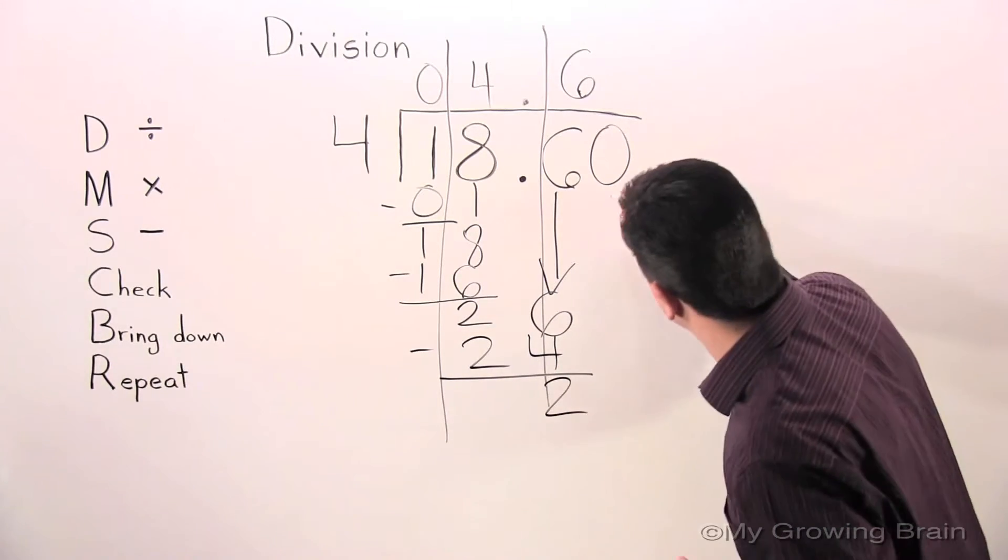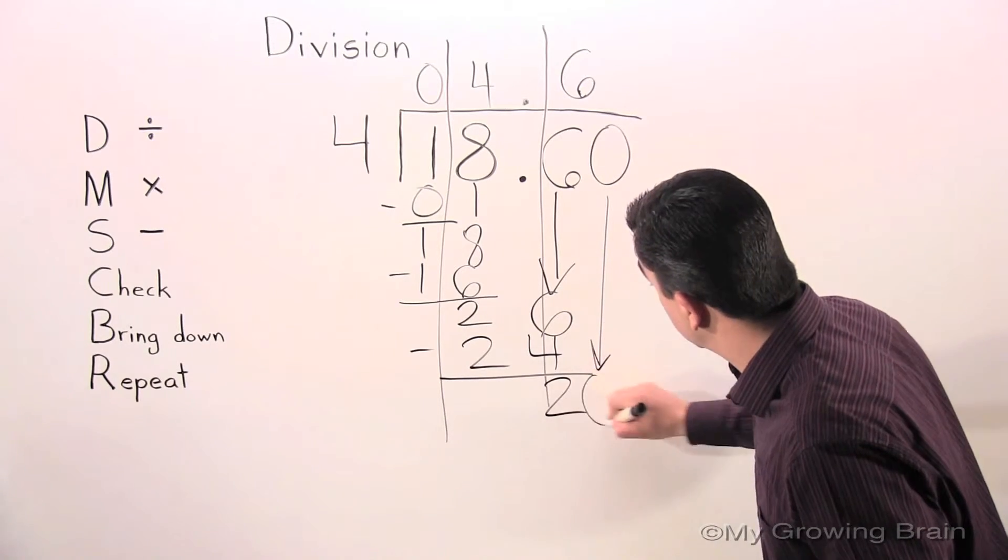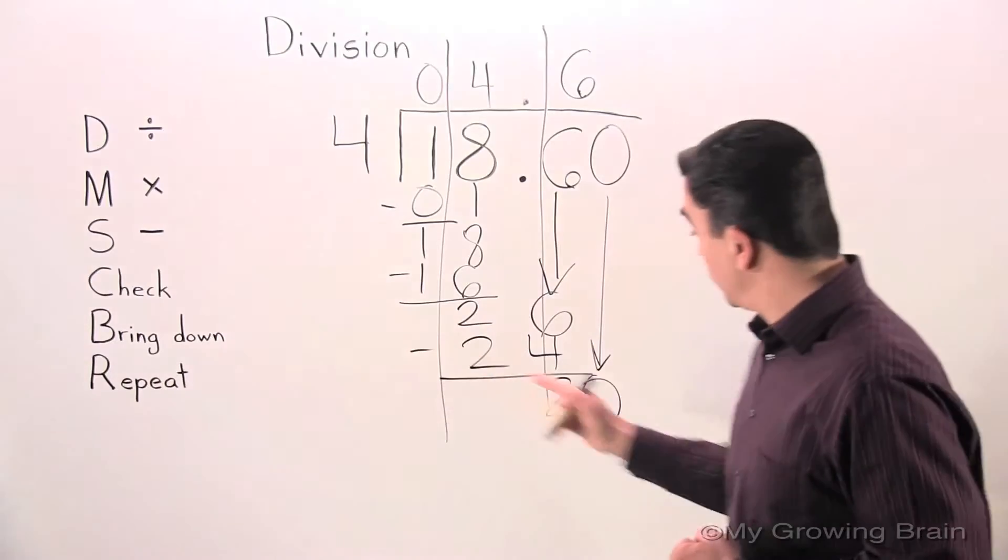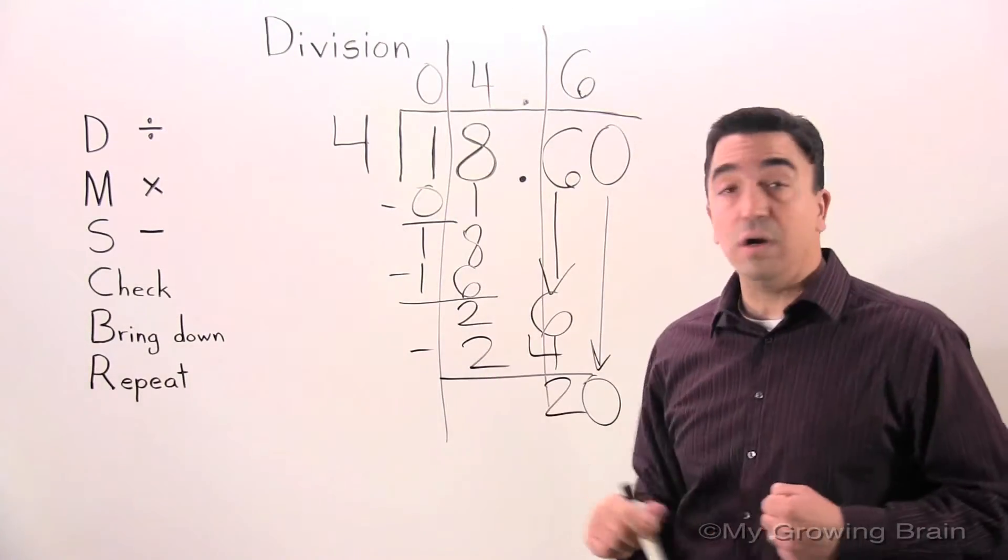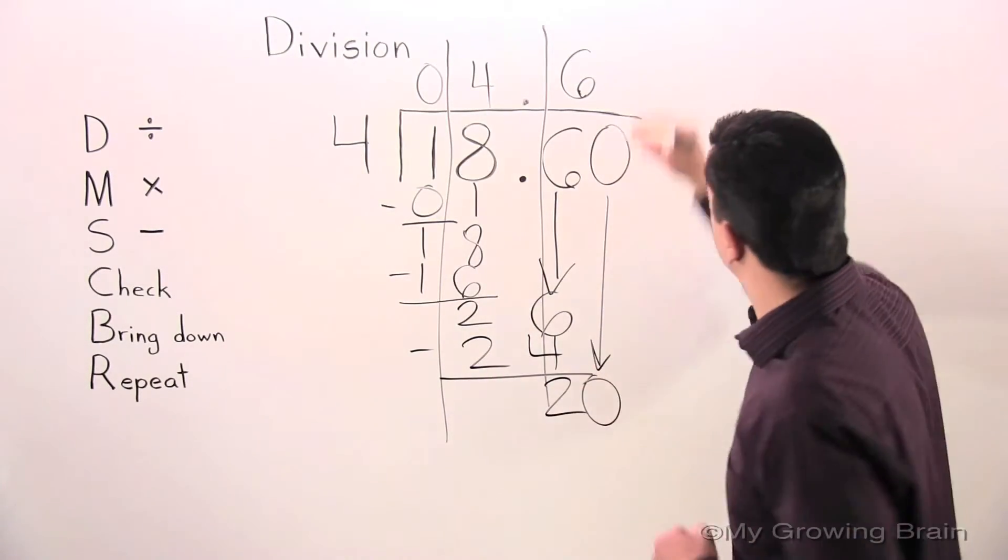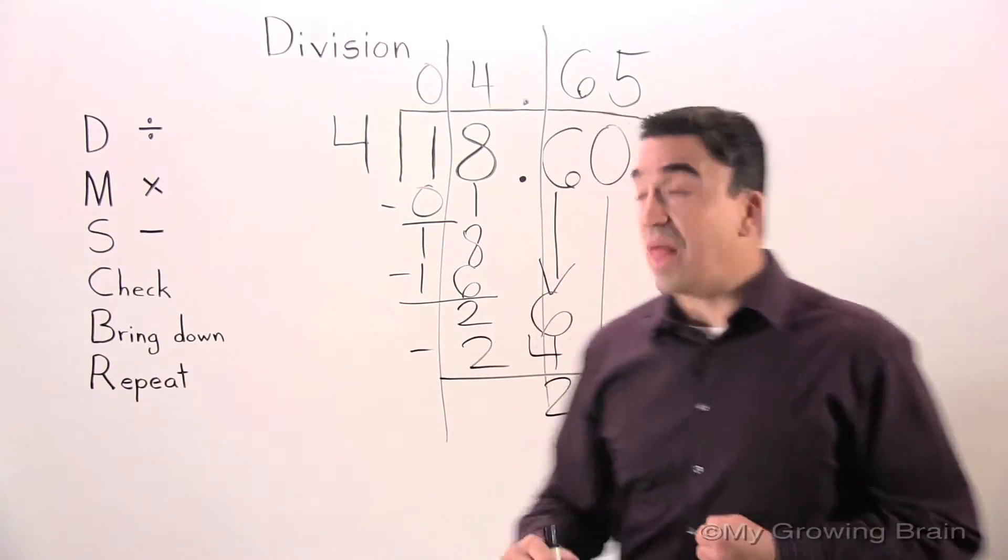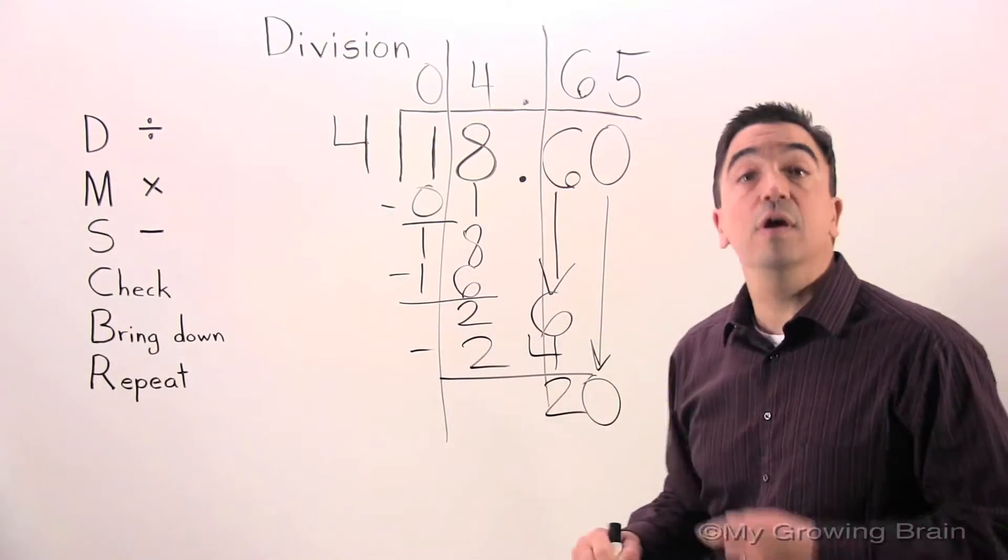We're bringing down the 0. Divide. 20 divided by 4 is 5. Multiply. 4 times 5 is 20.